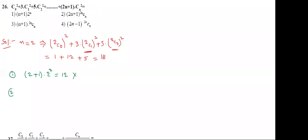Now second option: 2 twos are 4, 4 plus 1 is 5. Plus 2nCn — 2n means 4, so 4C2. 4 plus 1 means 5. What is 4C2? 4 into 3 divided by 1 into 2 = 6. 2 twos are 4, 3 twos are 6. So this is also the wrong answer.